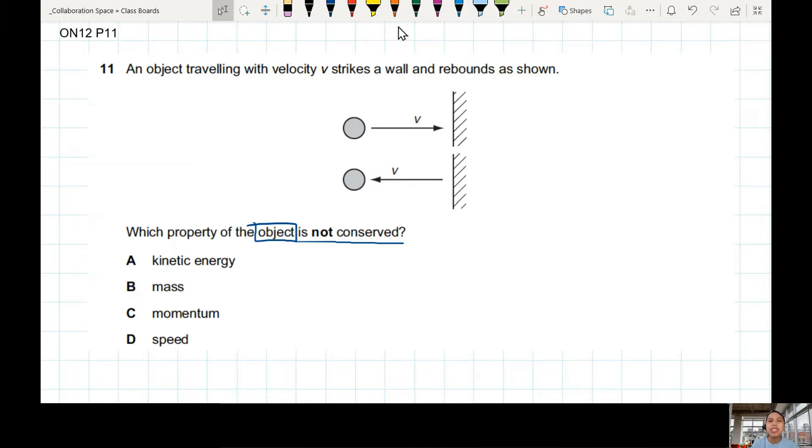Ball hit the wall, bounce back. Why is it not conserved? Conserved means what? Mass is M. Momentum is MV. Speed is V. Kinetic energy is half MV squared. How do you know? What does conserved mean?